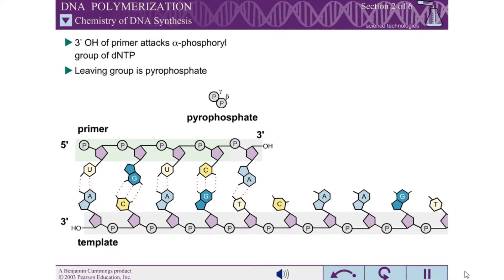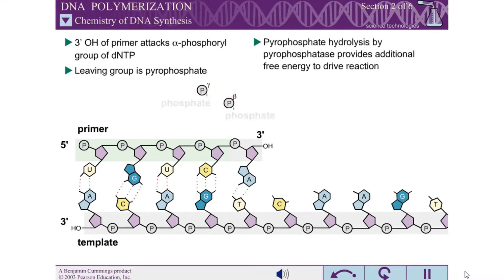The free energy change for this reaction is rather small. However, additional free energy is provided by the rapid hydrolysis of the pyrophosphate into two phosphate groups. This reaction is catalyzed by the enzyme pyrophosphatase.